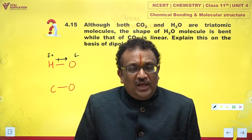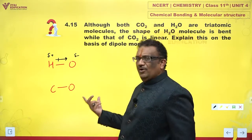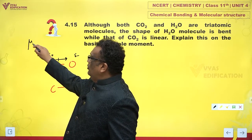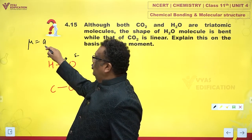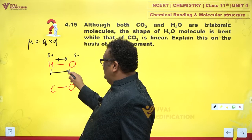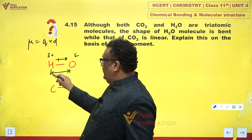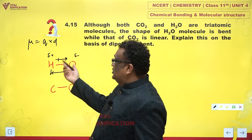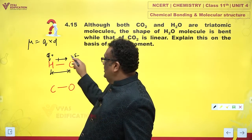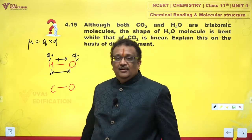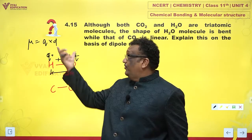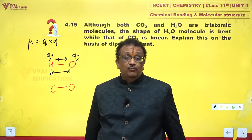How do we calculate this dipole moment? There is a formula for that. Dipole moment, mu, is Q into D. D is the distance between the two nuclei, and Q is the charge. You just multiply charge by distance and you get this quantity called dipole moment.